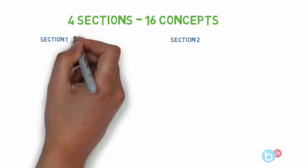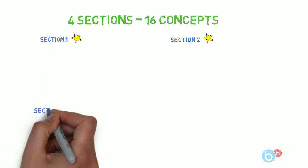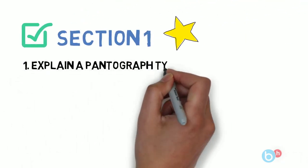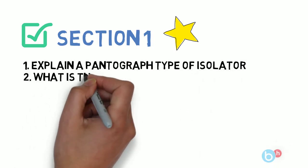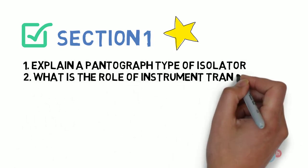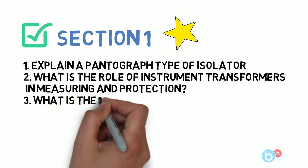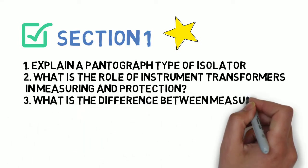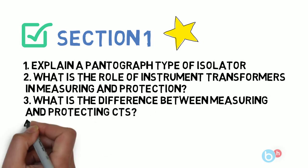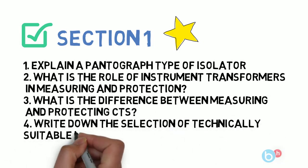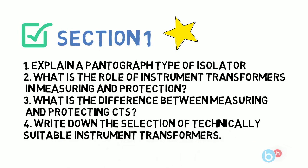There are 16 concepts split into four sections, with section one and section two being the most important. Section one covers four questions: first, explain a pantograph as a type of isolator; next, what is the role of instrument transformers in measuring and protection; then, what is the difference between measuring and protecting CTs; and finally, write down the selection of technically suitable instrument transformers.